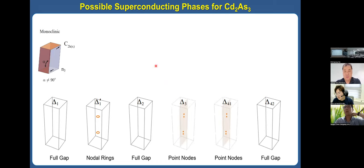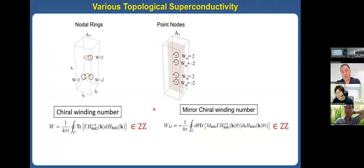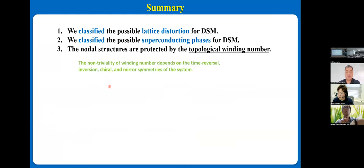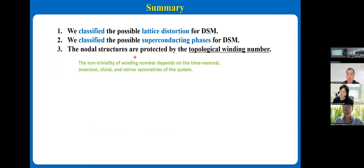For cadmium arsenide, there are many interesting topological structures: for example, nodal links and nodal points. These are protected by the chiral winding number W = 2. Also, the nodal point is protected by the mirror chiral winding number in the mirror plane, and they are classified as Z₂. We have shown that these numbers are classified as Z₂. We classified all possible lattice distortions for the minimal model for Dirac semimetal, and we classified all possible superconducting phases. The nodal structures are protected by topological winding numbers.